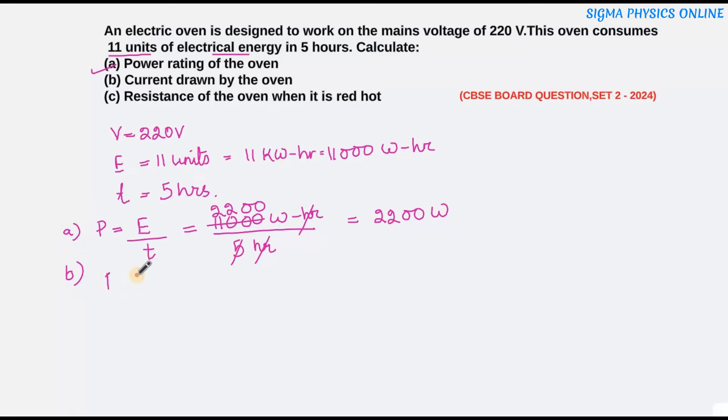Then the next one is the current drawn by the oven. The formula for power is given by P is equal to V I. We get I as P by V. P we got here as 2200 watt by voltage is given as 220 volt. Here it's 10. The current drawn by the oven is 10 ampere.